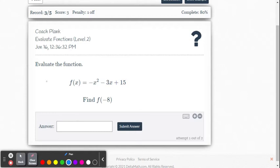That means x is negative 8. So let's write it out in function notation. f of negative 8 equals negative 1 multiplied by negative 8 squared. We substitute the negative 8 for x minus 3 multiplied by negative 8 plus 15.